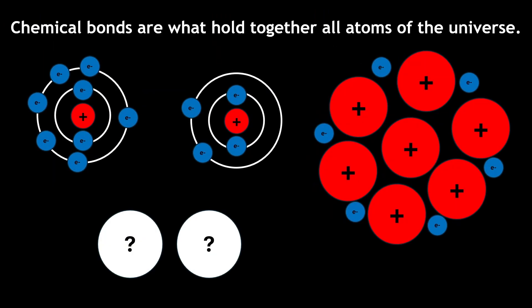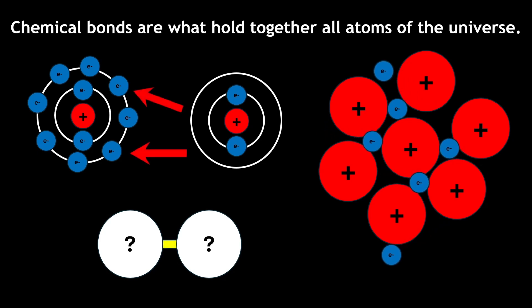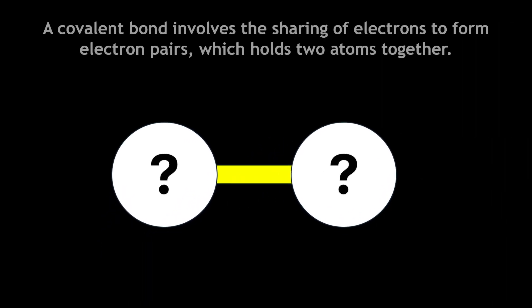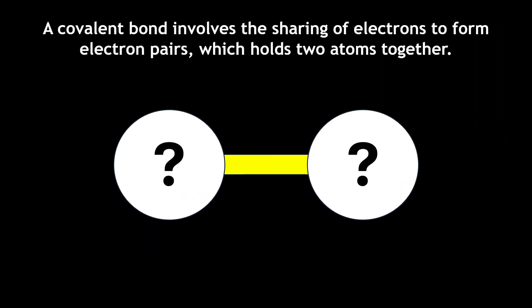Chemical bonds are what hold together the atoms of our universe. There are many types of chemical bonds, one of which is called a covalent bond. A covalent bond involves the sharing of electrons to form electron pairs, which holds two atoms together.